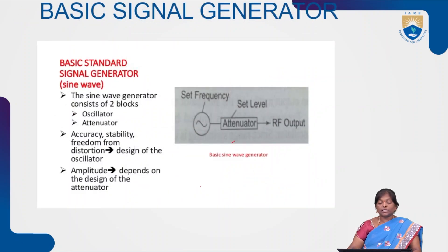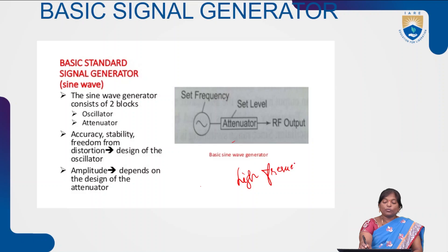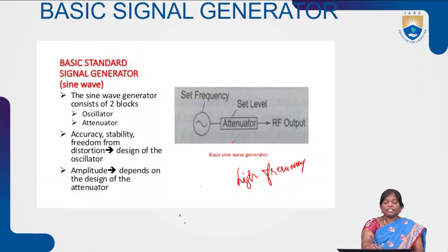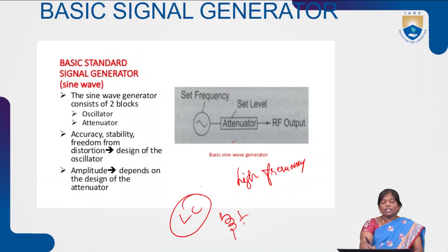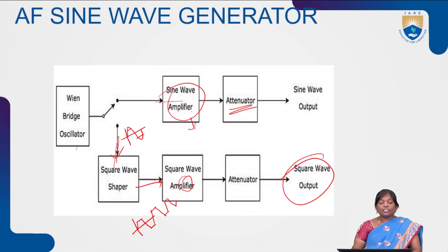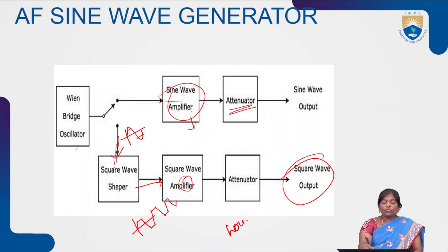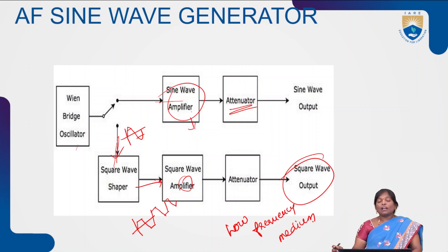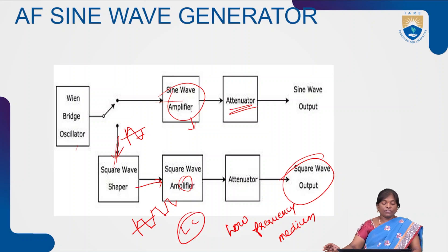The main difference between the basic signal generator and the AF sine and square wave generator is the frequency range. The AF generator generates high frequency RF output by reducing the L and C values — as inductance and capacitance decrease, the frequency increases. To generate low or medium frequency AF signals, the L and C values should be large; as L and C increase, the generator produces low or medium frequency signals.